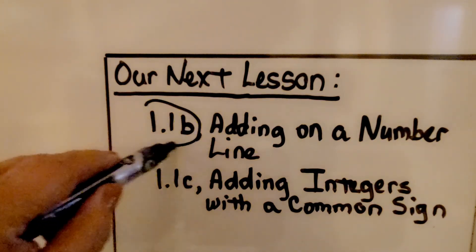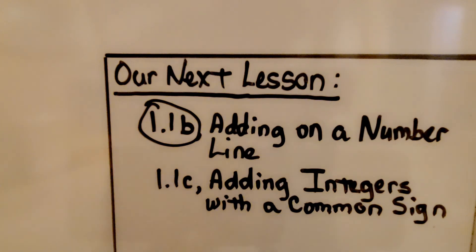We've finished 1.1b. We're going to move on to 1.1c, adding integers with a common sign.